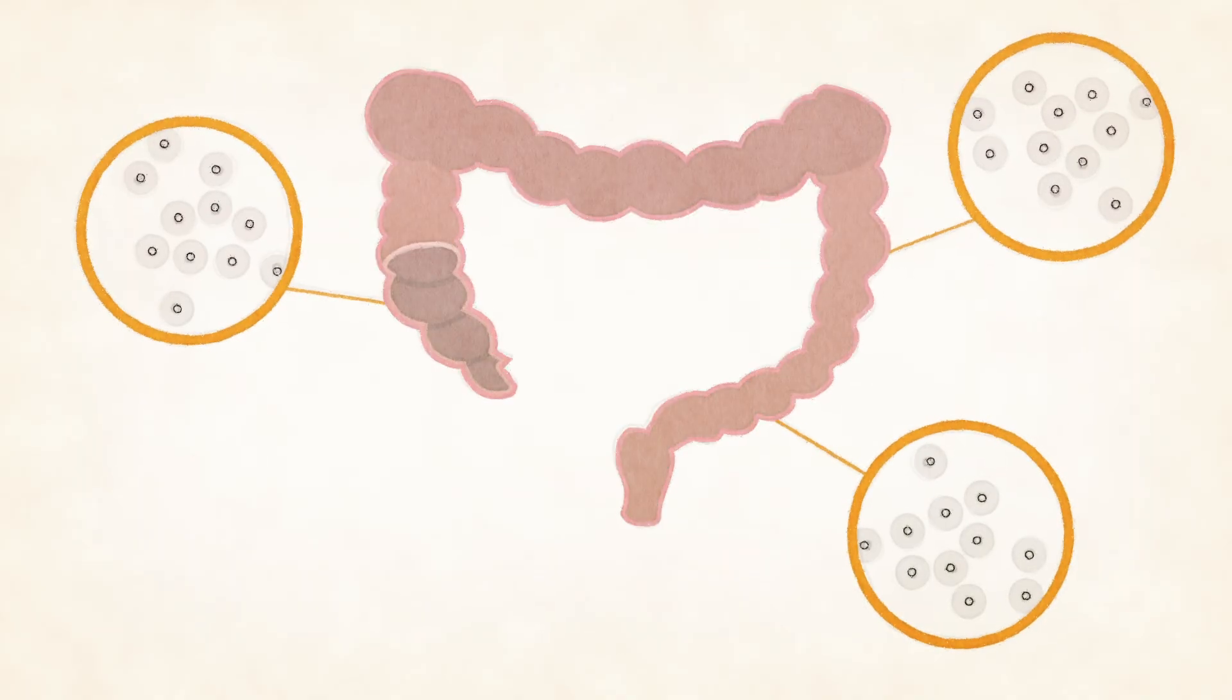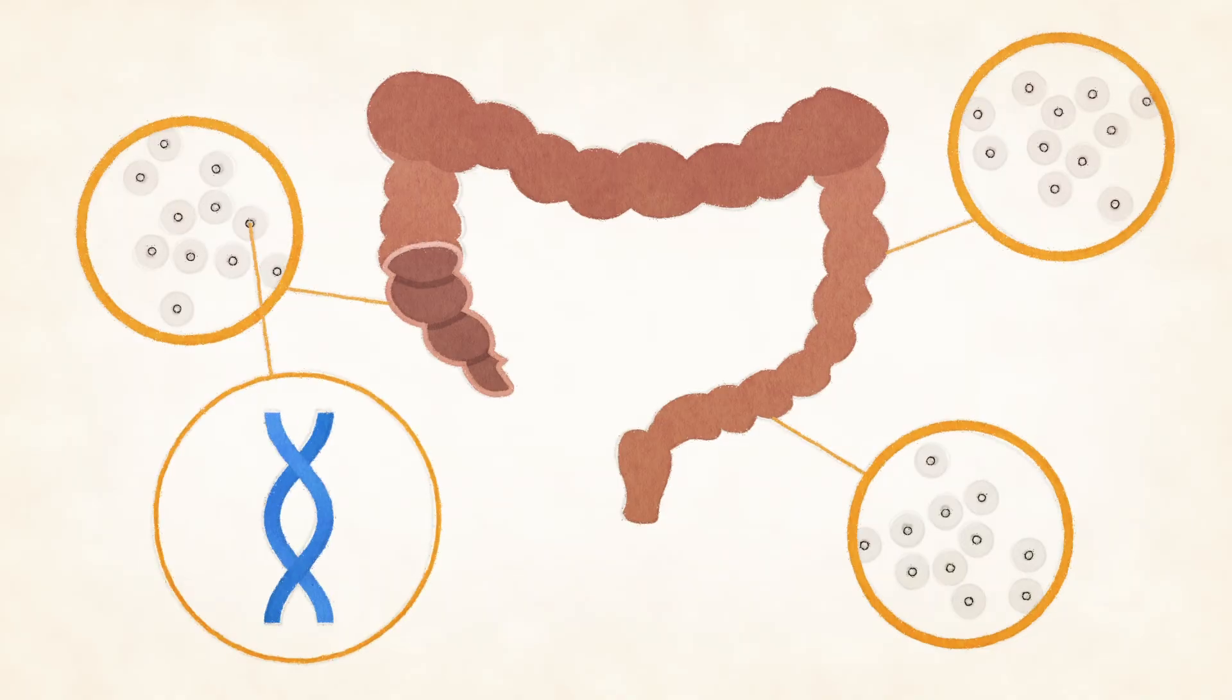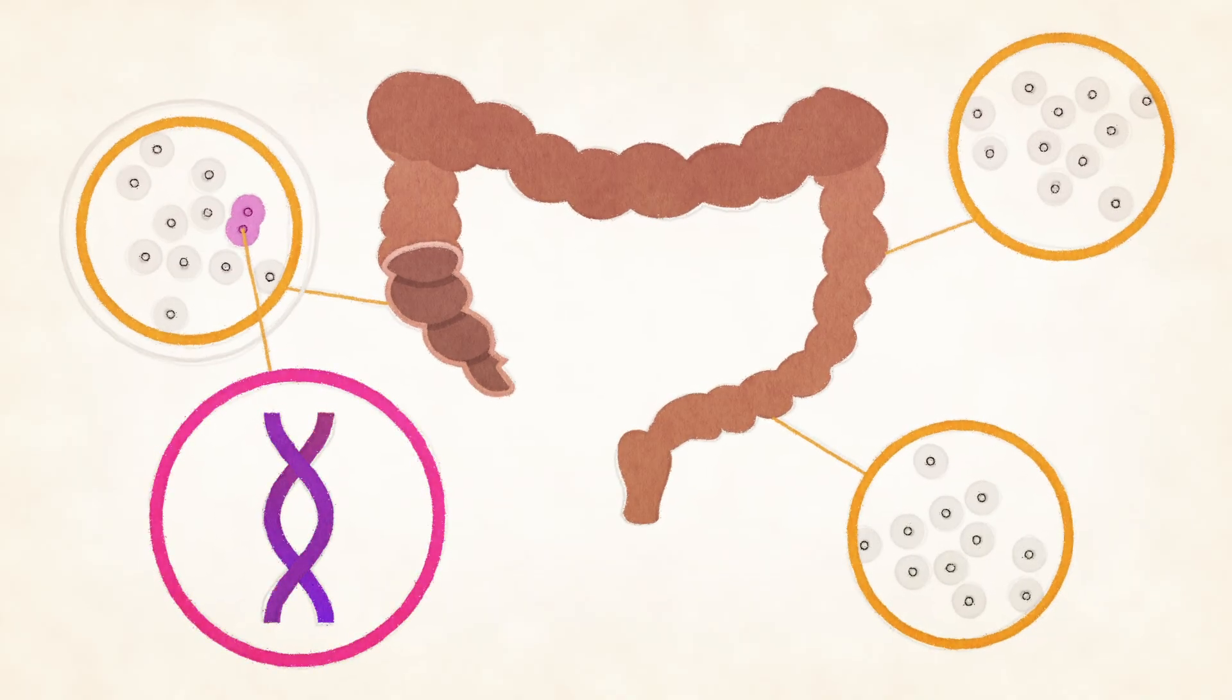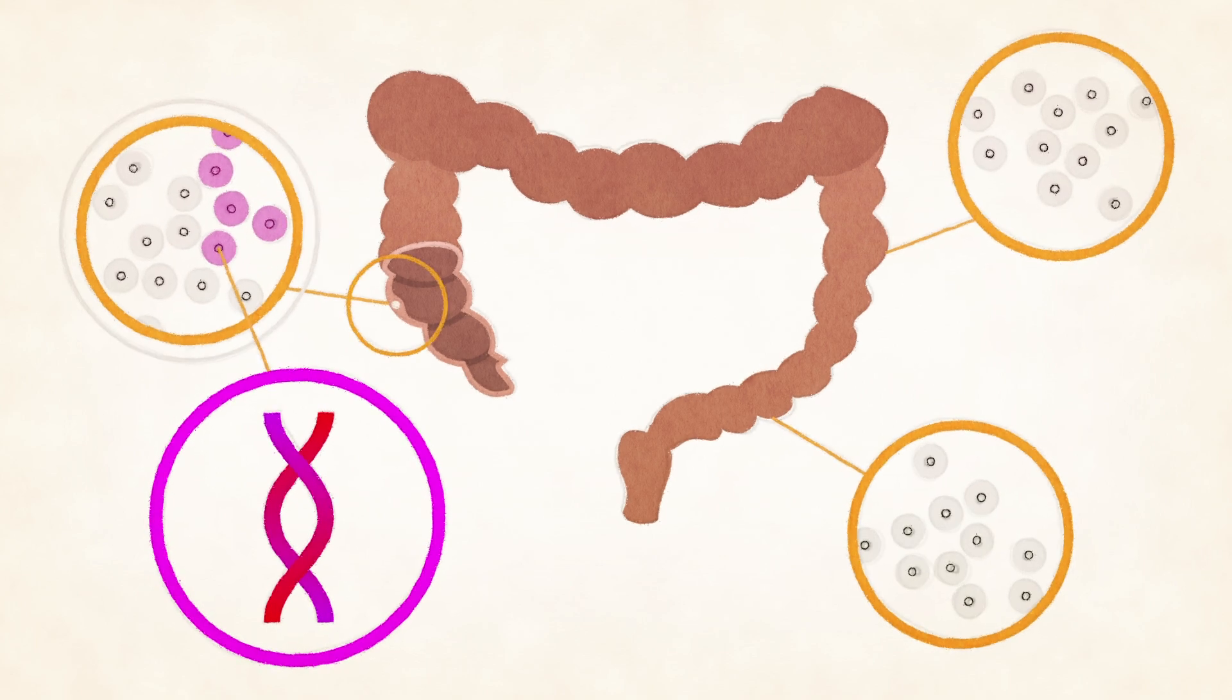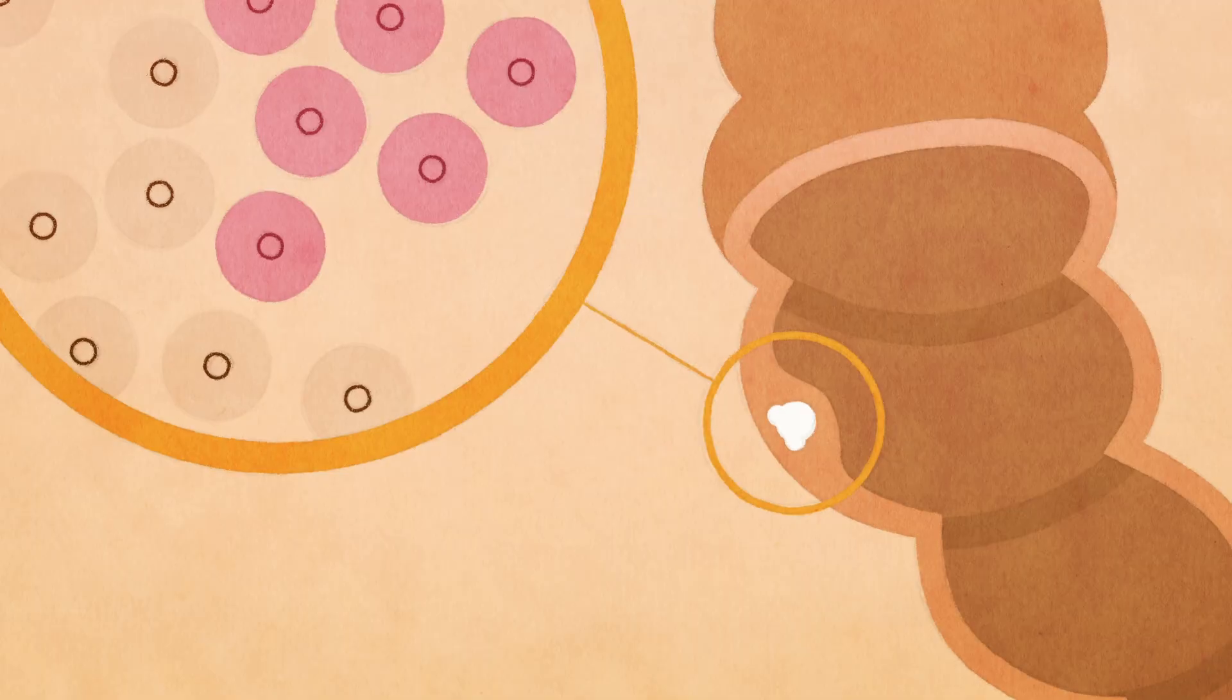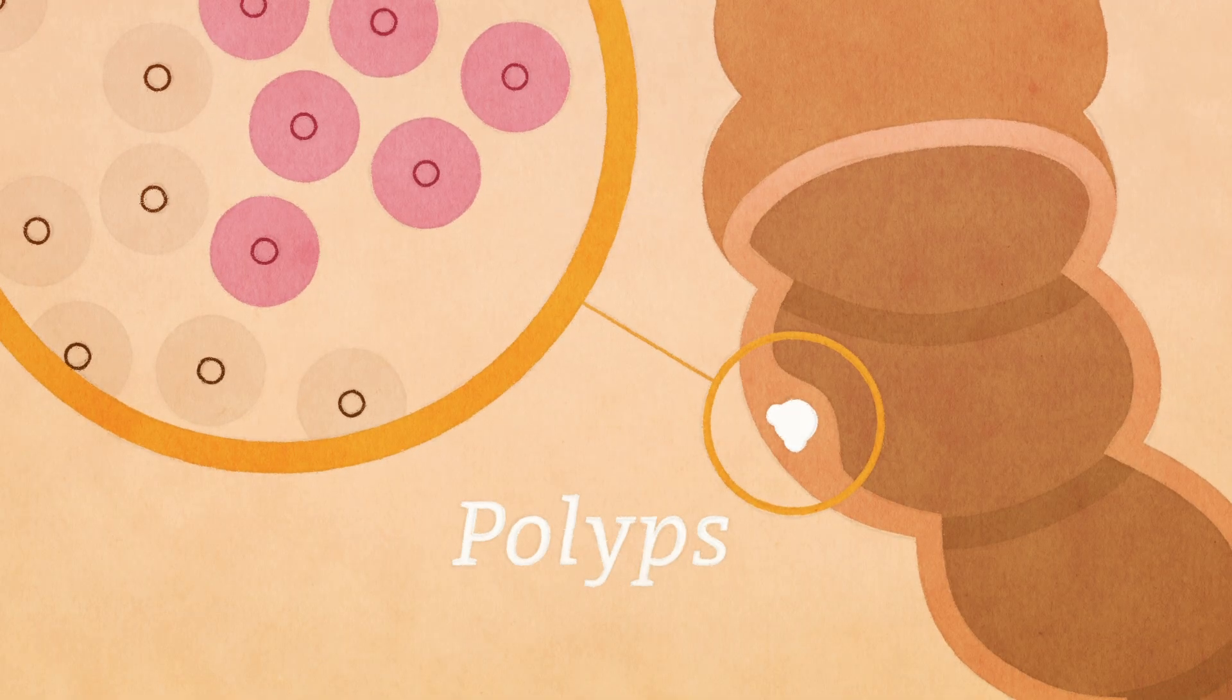Cells in this organ's lining constantly renew themselves, but the genes that moderate this process occasionally go awry, leading to the excessive growth of new cells. That results in small growths or abnormal clumps of cells called polyps.